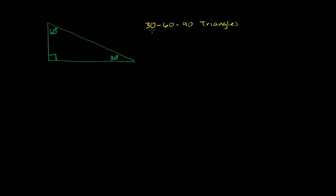What I want to do in this video is discuss a special class of triangles called 30-60-90 triangles. And I think you know why they're called this — the measures of their angles are 30 degrees, 60 degrees, and 90 degrees. What we're going to prove, which tends to be a very useful result in geometry and trigonometry, is the ratios between the sides of a 30-60-90 triangle.